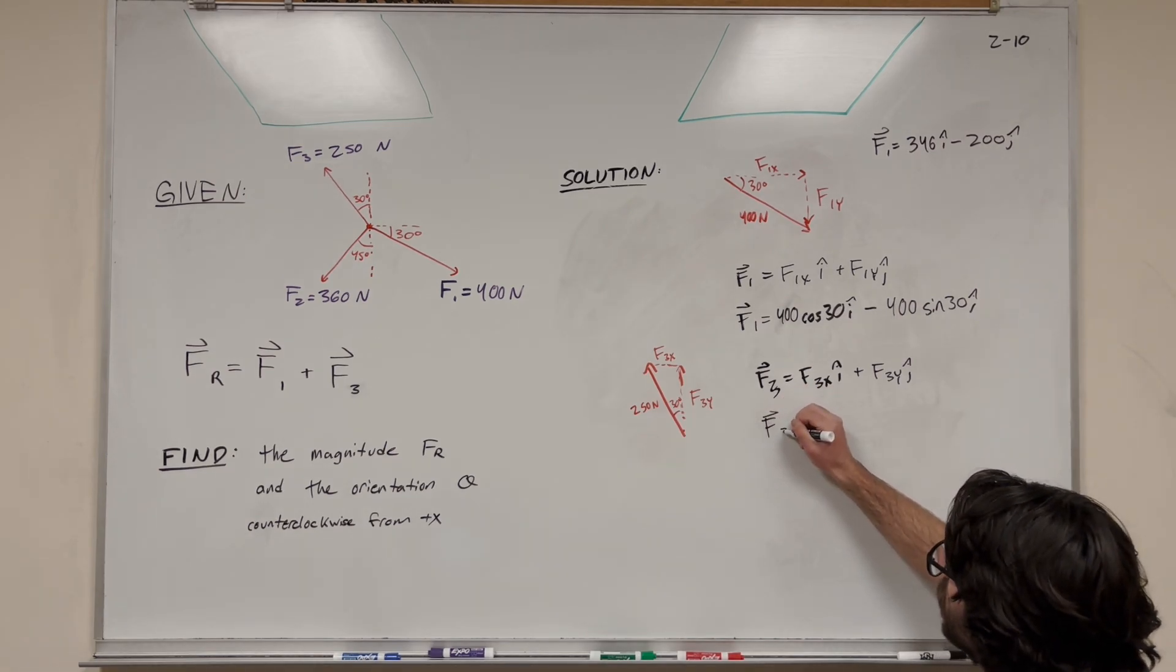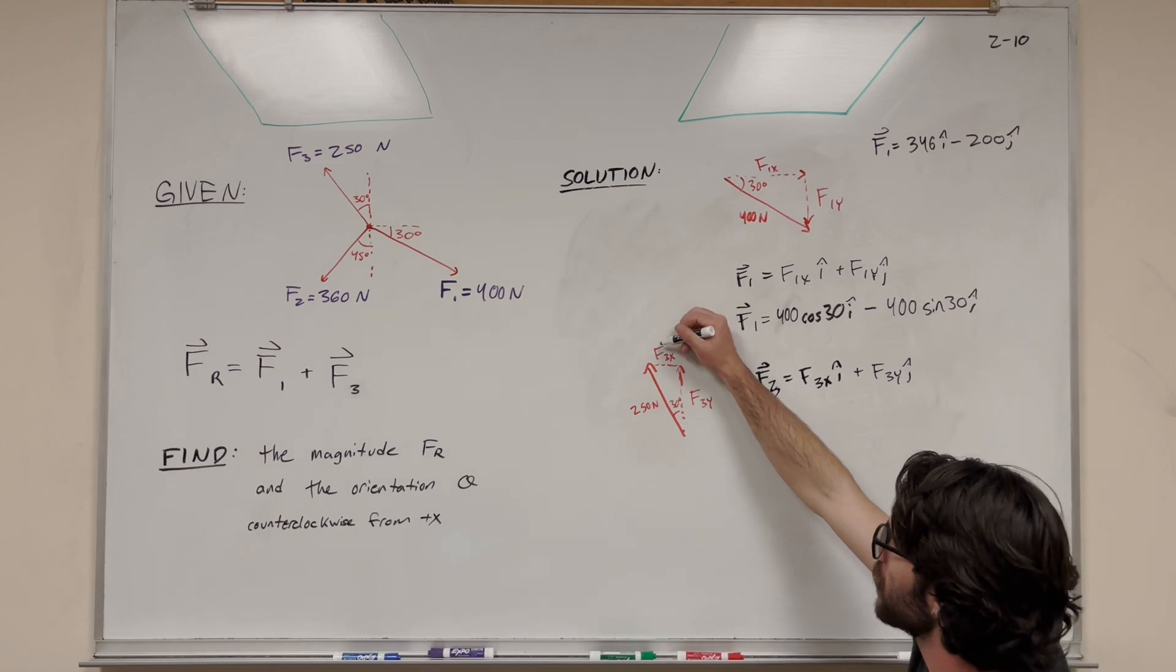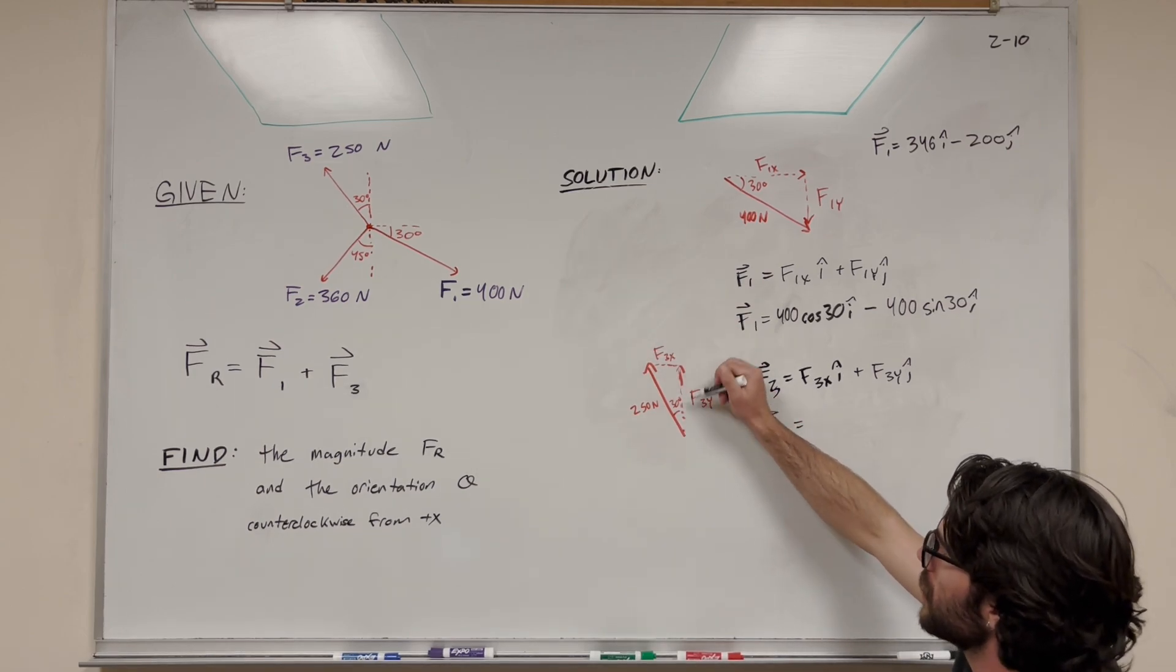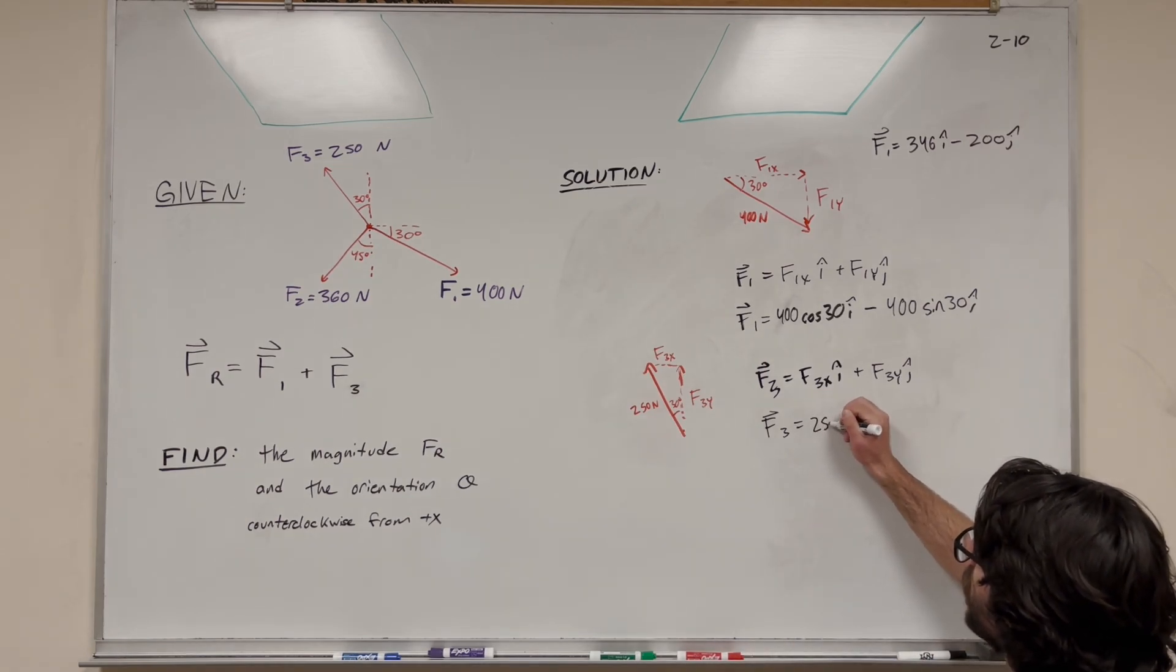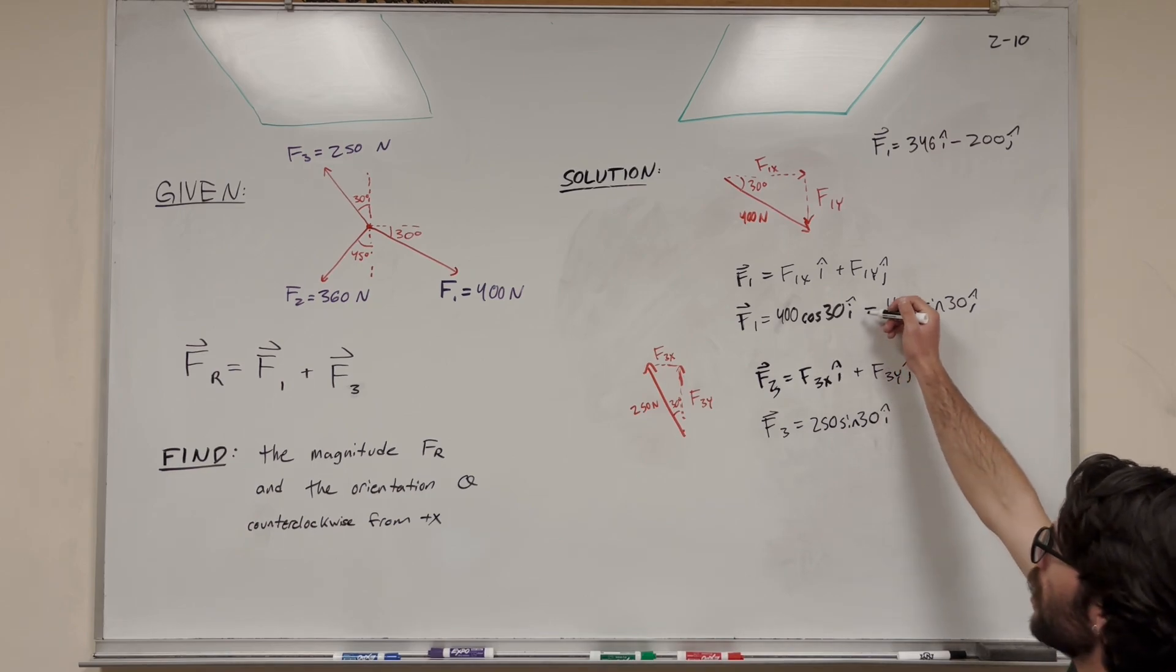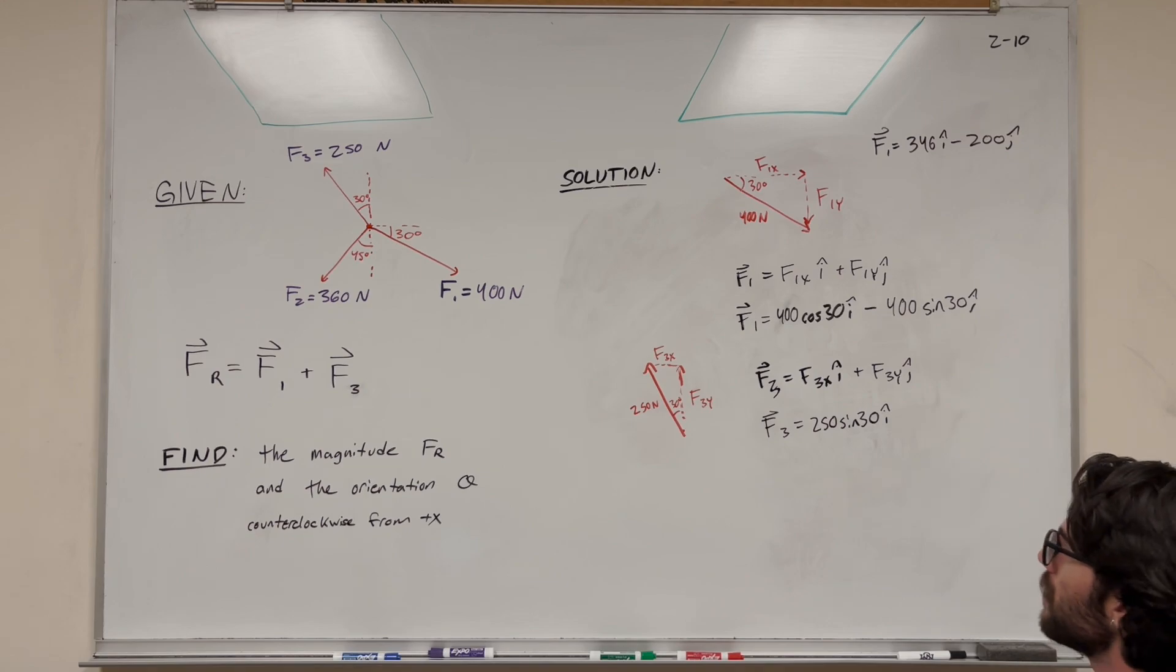Try this for yourself, but I'll solve it here. For the x component, this time it's opposite to the angle, not adjacent. So we use sine for the x component. This is 250 times sine of 30 times i. It's not always cosine for the i component - it can switch between sine and cosine depending on which angle you have.